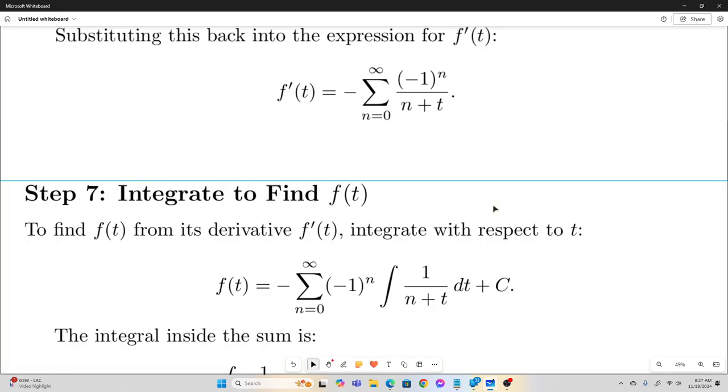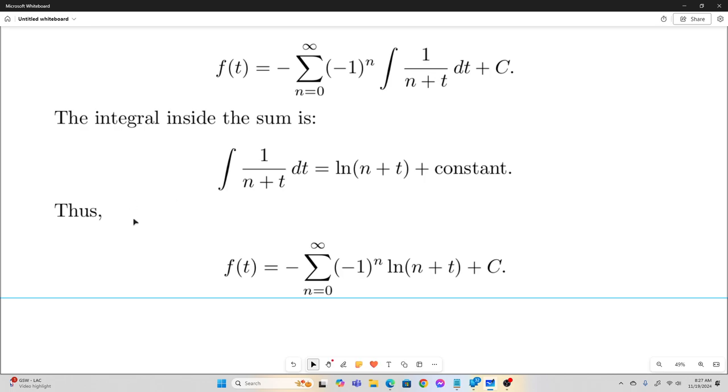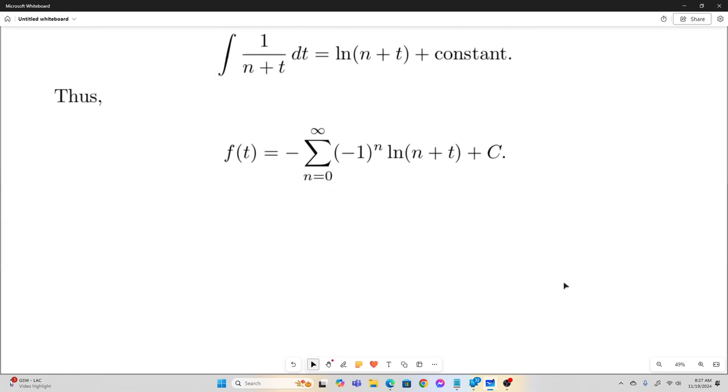All right. Well, we are not interested in f prime of t. We want f of t so that we can plug in what we need to plug in to find the value of our original integral. So all we do is integrate with respect to t, giving us natural log of n plus t plus a constant. Therefore, we have this. This is our f of t.